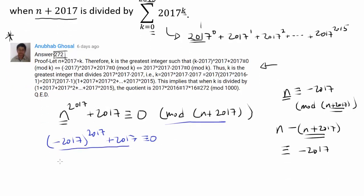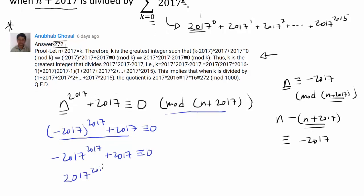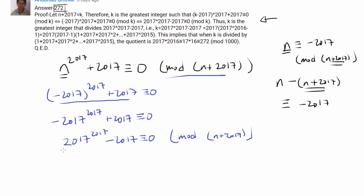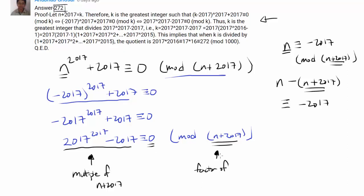We can replace n with negative 2017, so negative 2017 to the 2017 power plus 2017 is congruent to 0 mod n plus 2017. Multiplying by negative 1 gives us 2017 to the 2017 minus 2017 is congruent to 0 mod n plus 2017. This tells us that 2017 to the 2017 power minus 2017 is a multiple of n plus 2017, because it is congruent to 0 mod n plus 2017. In other words, n plus 2017 is a factor of 2017^2017 minus 2017.